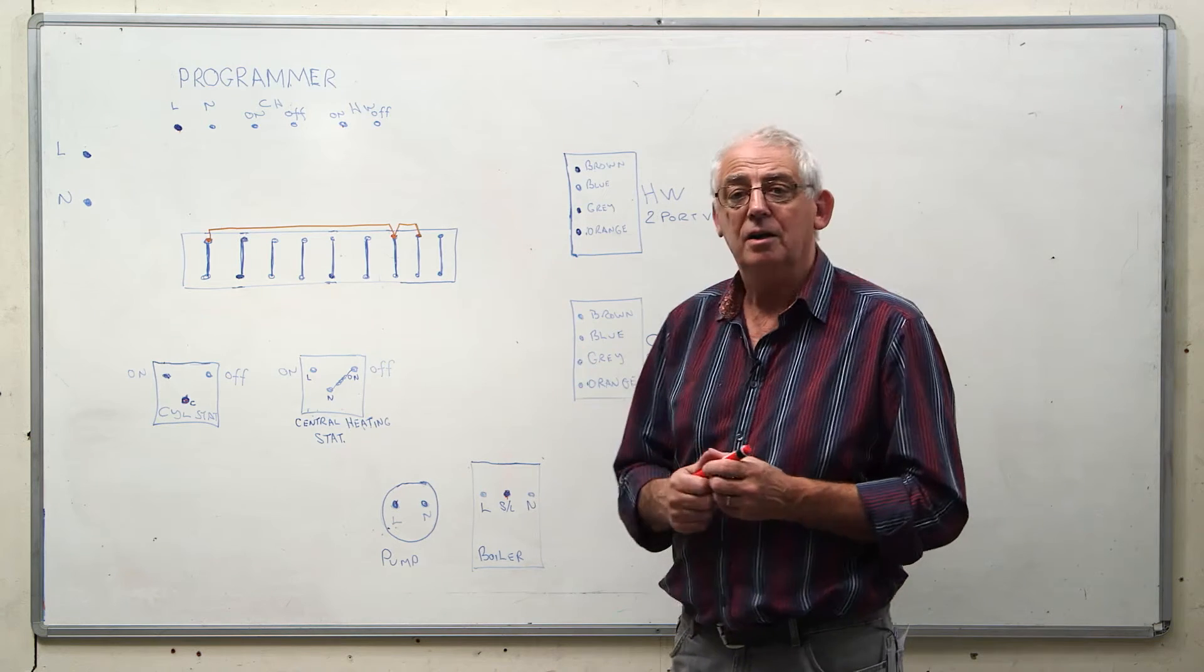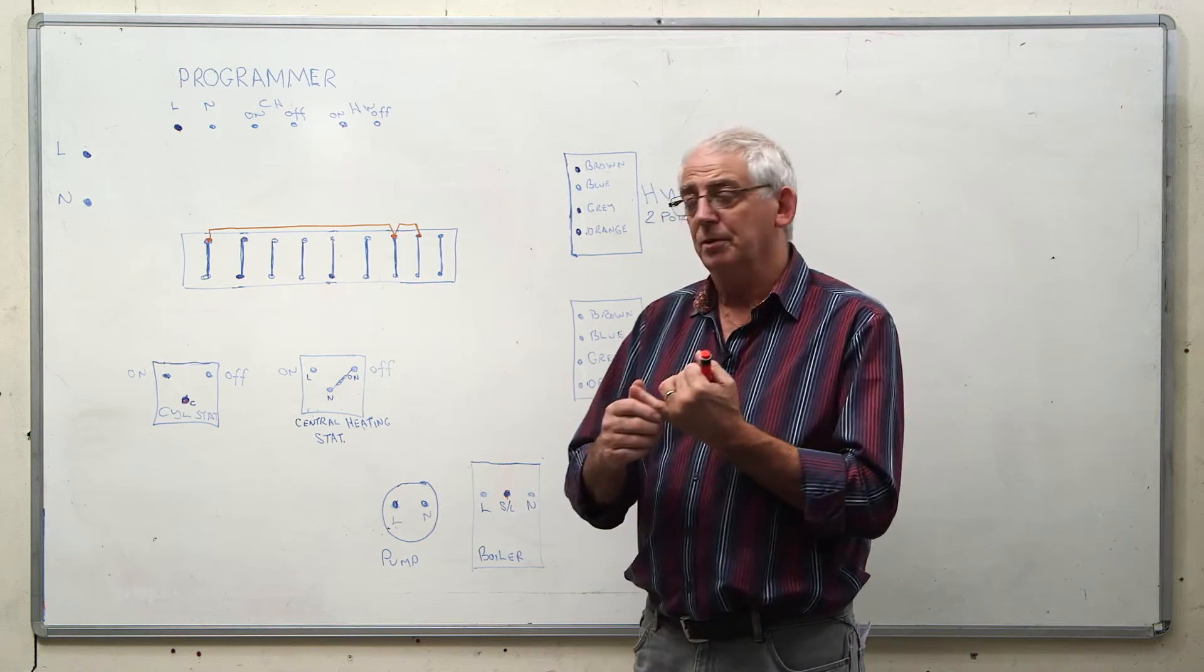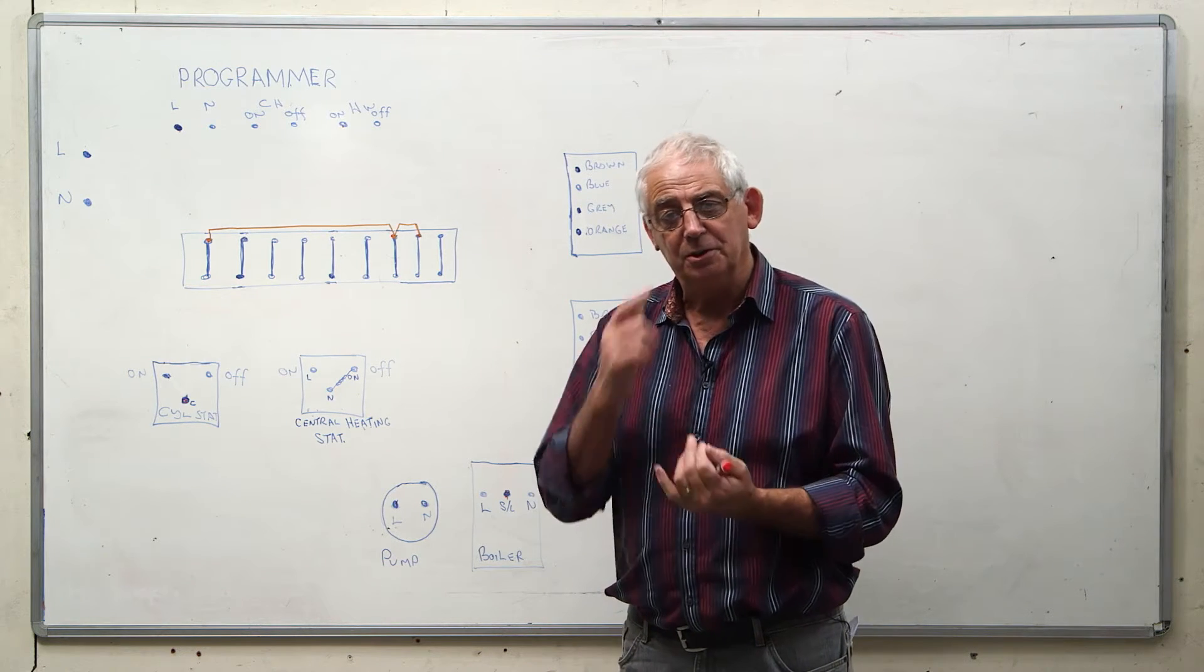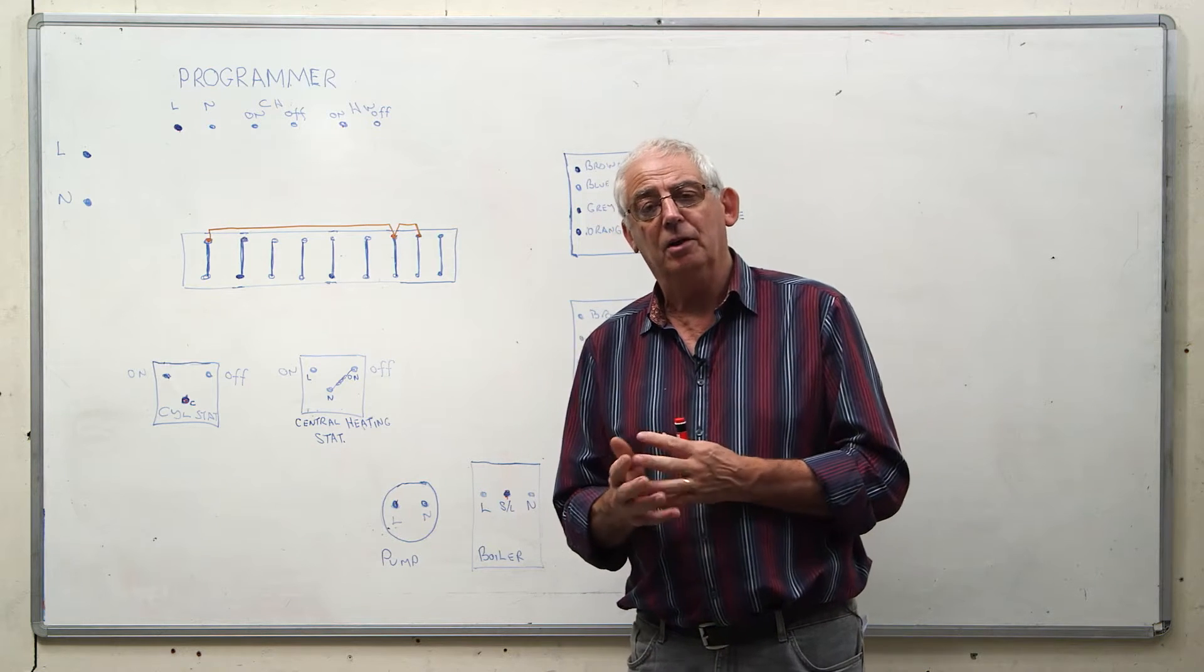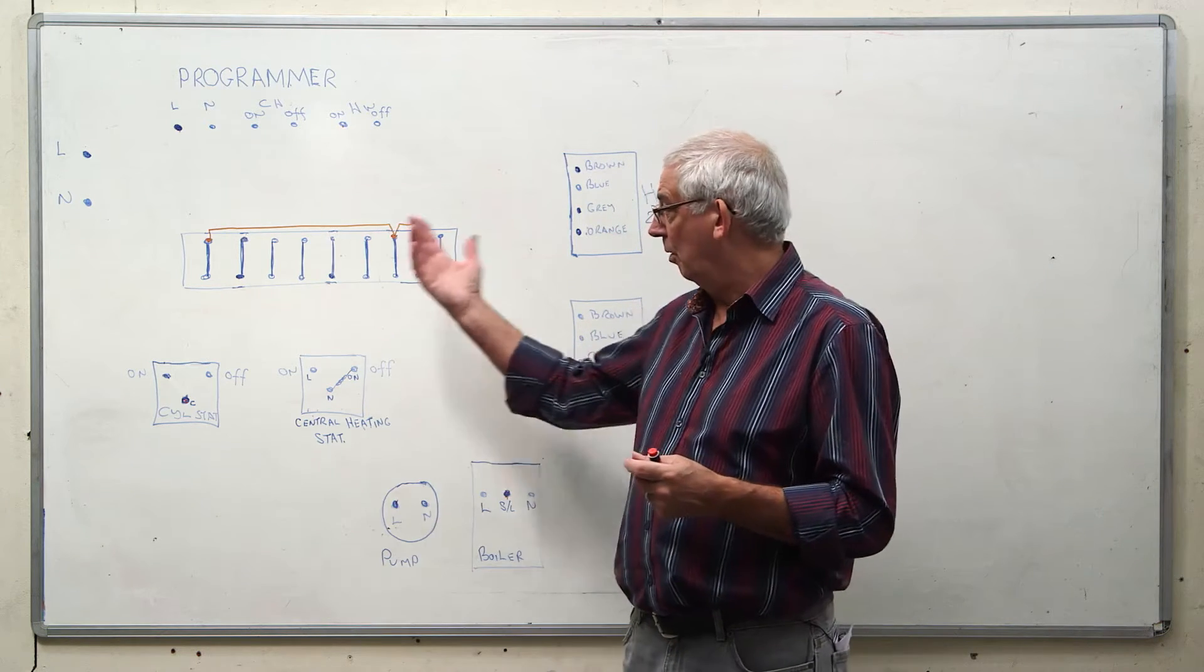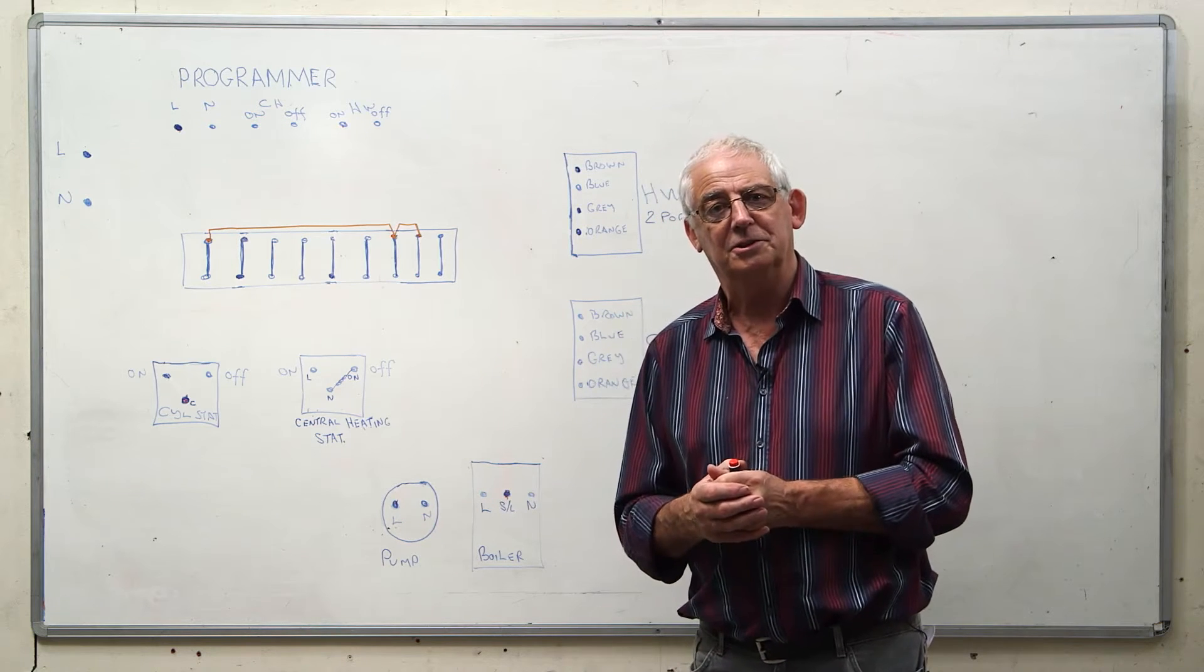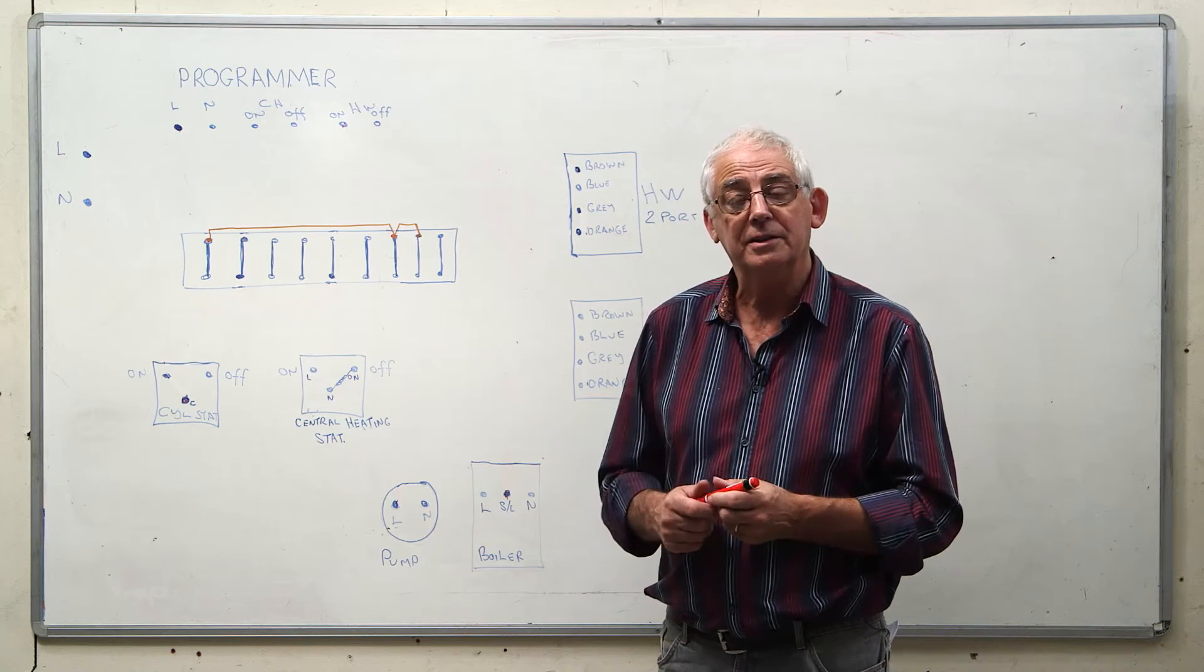First of all we need a live supply. In this demonstration I'm not going to draw in the earths because we'll end up with so many wires it will become just a fog, and probably I won't draw the neutrals in until the very last thing. So first of all I'm going to start drawing the line conductors in.